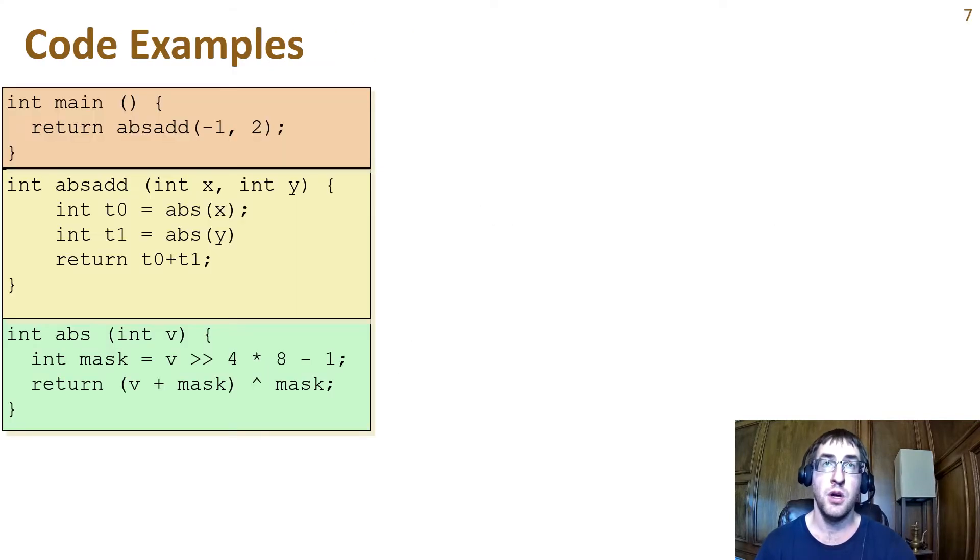Here's a small source program we'll use to explain the general idea of procedure calls. Execution will begin in main, which will return the call to absadd of arguments negative 1 and 2. The absadd procedure has two input parameters, both integers. It makes two procedure calls and it returns an int.